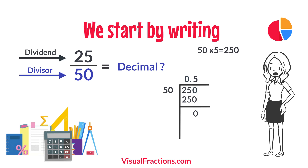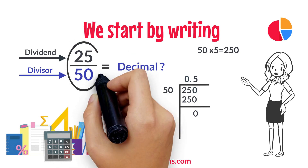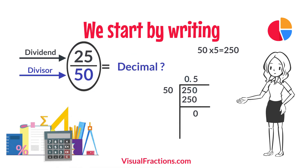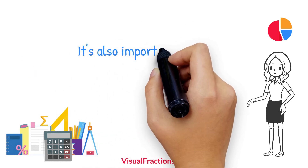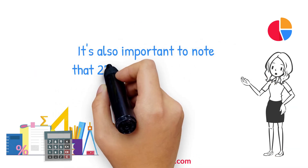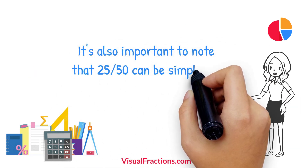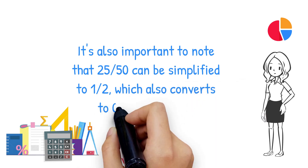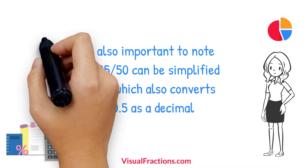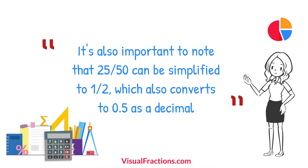So, there we have it. The fraction 25 50ths converted to a decimal is 0.5. It's also important to note that 25 50ths can be simplified to 1 half, which also converts to 0.5 as a decimal.